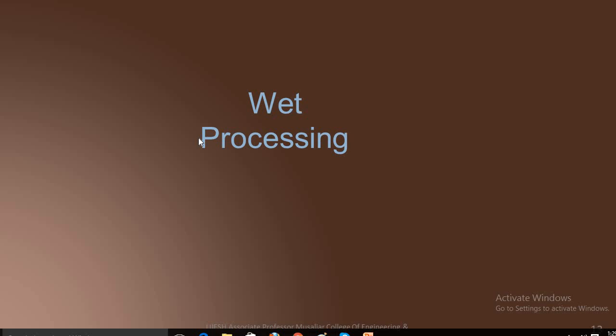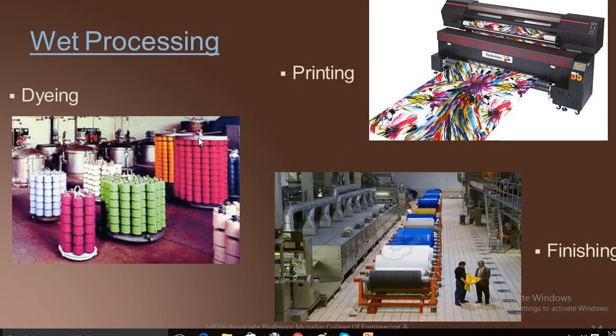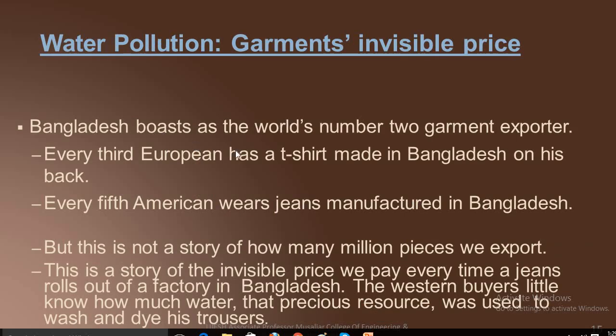The next process is wet processing, which involves dyeing, printing, finishing, etc. Every year, 1500 billion liters of water is used to dye and wash cotton and clothes for the garments industry — the same amount that could meet the demands of eight lakh people for a whole year.